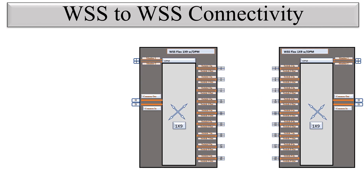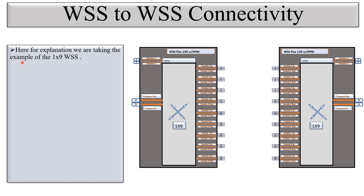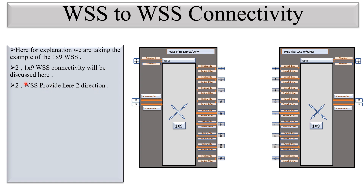I have taken a reference example of a WSS 1x9 with OPM for this demonstration. You can see this is the first WSS 1x9 and this is the second WSS. Each WSS 1x9 provides one direction, so two WSS units provide two directions. You can see one direction is connected to the amplifier and the other direction represents another path. For each direction, one WSS is required, and if we need another direction we install another WSS.